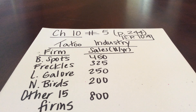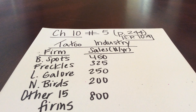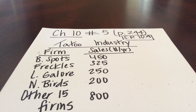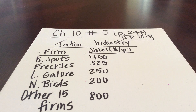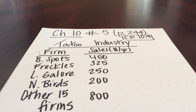This is Professor Melanie Hildebrandt. I'm going to work another problem from material in Chapter 10. This comes from question number 5 on page 244. You can also find this question in the MyEconLab study plan — it would be question 10.4.